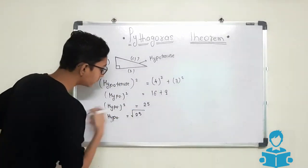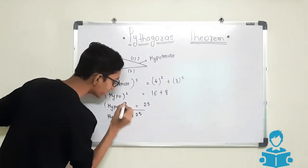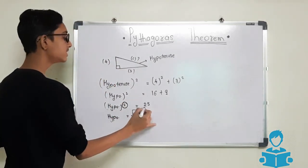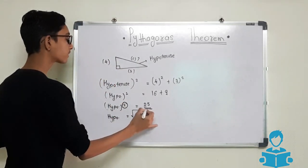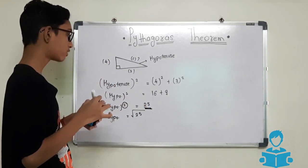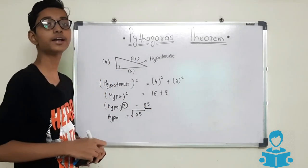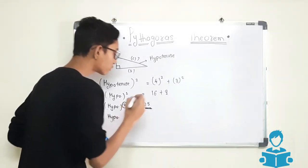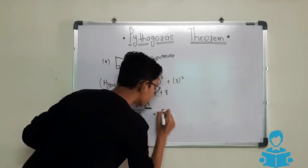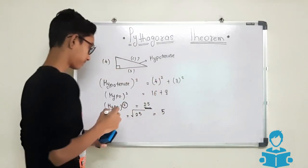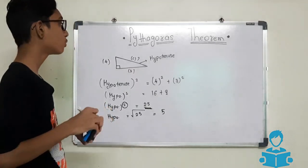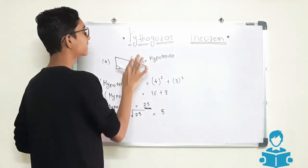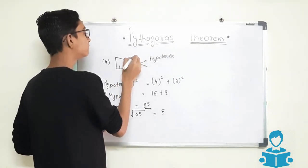The square symbol will come to this side and it will become the square root of 25. The square root of 25 is 5. So we found the hypotenuse, that is 5.